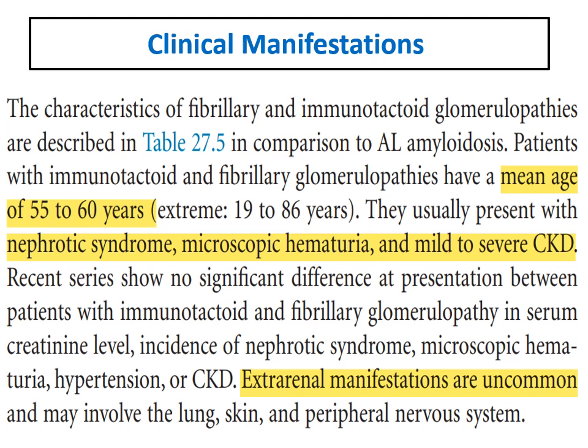Regarding clinical manifestations — this is very important for when to suspect immunotactoid. The mean age is from 55 to 60 years. Most cases are older than 50 years of age, though there are some exceptions.